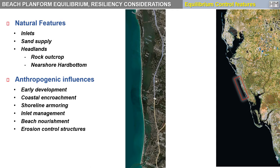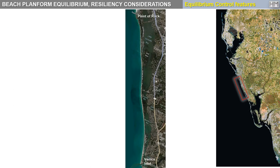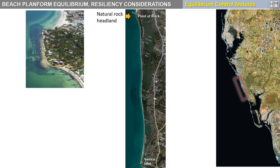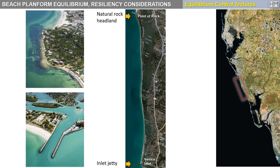Areas near tidal inlets can be dynamic, as we illustrated in the previous example. Parts of the open coast in the middle of a barrier island system can also be subject to long-term evolutions and varying dynamic equilibrium conditions. We will use an example of a coastline that spans over 20 kilometers between inlets with several control features that affect the equilibrium planform. In this example, we look at a coastline that spans over 20 kilometers between a natural rock headland and an inlet jetty, with an interior influence of a hard bottom that supports a headland along that coastline.